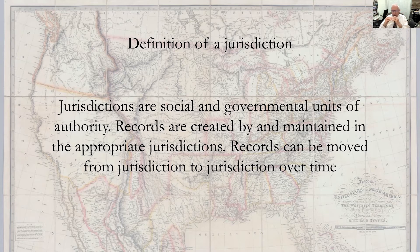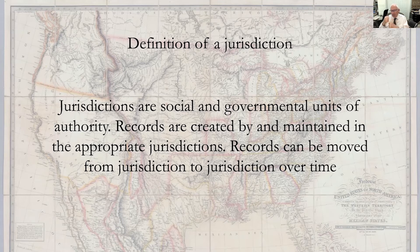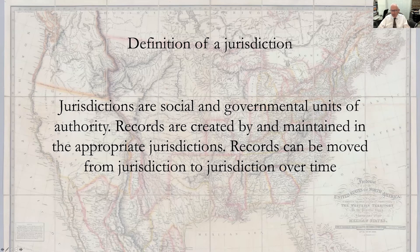A jurisdictional approach to genealogy focuses on the time and the place, then focuses on all possible jurisdictional entities that could have maintained records about that time and place. Understanding that once records are created, they might be moved: counties are divided, cities disappear, places get renamed, and boundaries change. Foreign boundaries have changed considerably over the last hundred years. The concept is to focus on these jurisdictions and the records created within them.